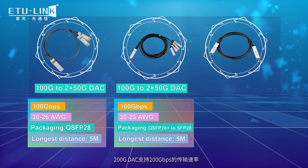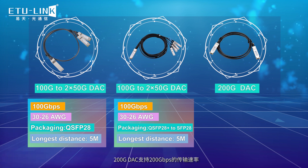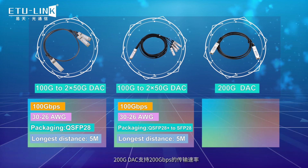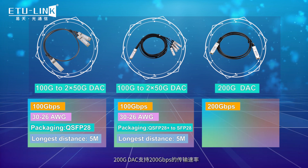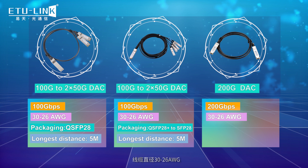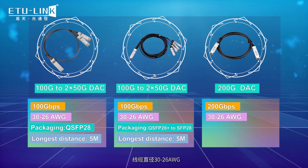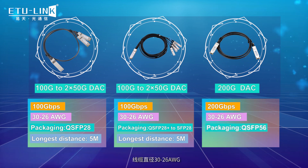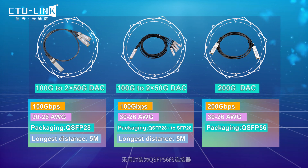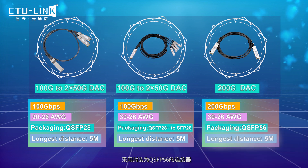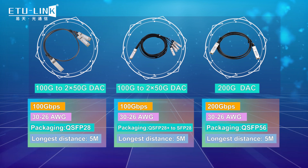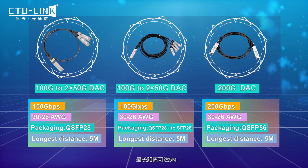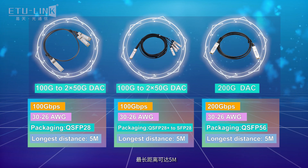The 200 Gb DAC supports a transmission rate of 200 Gb. The cable diameter is 30 to 26 AWG, the packing form is QSFP-56, and the longest distance can reach 5 m.